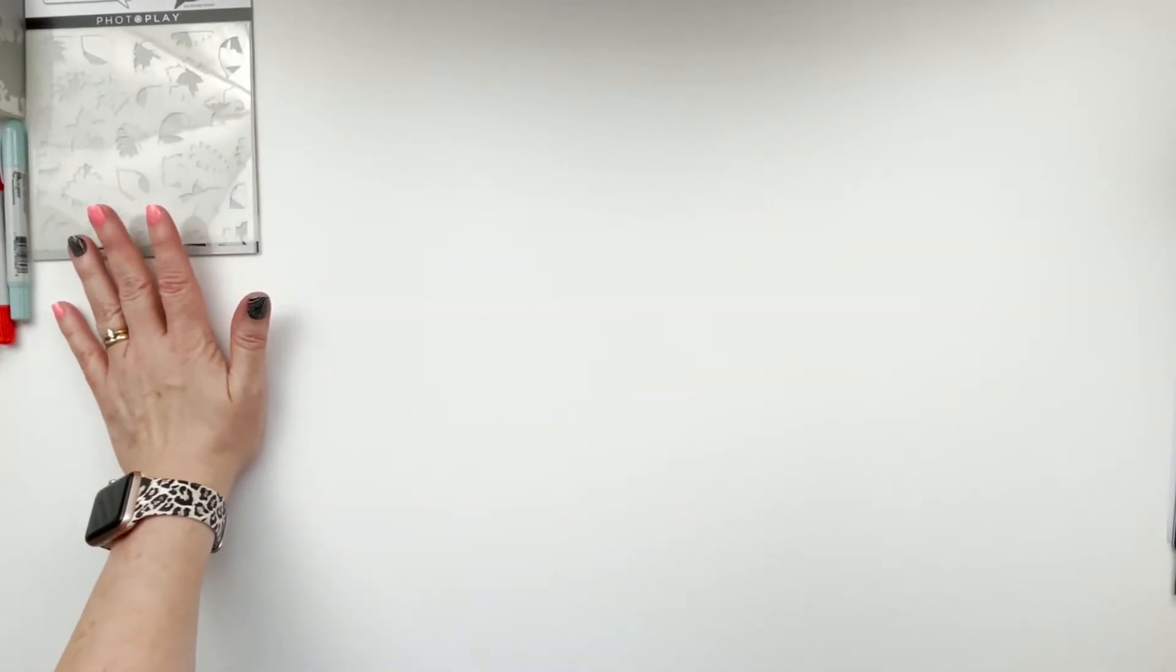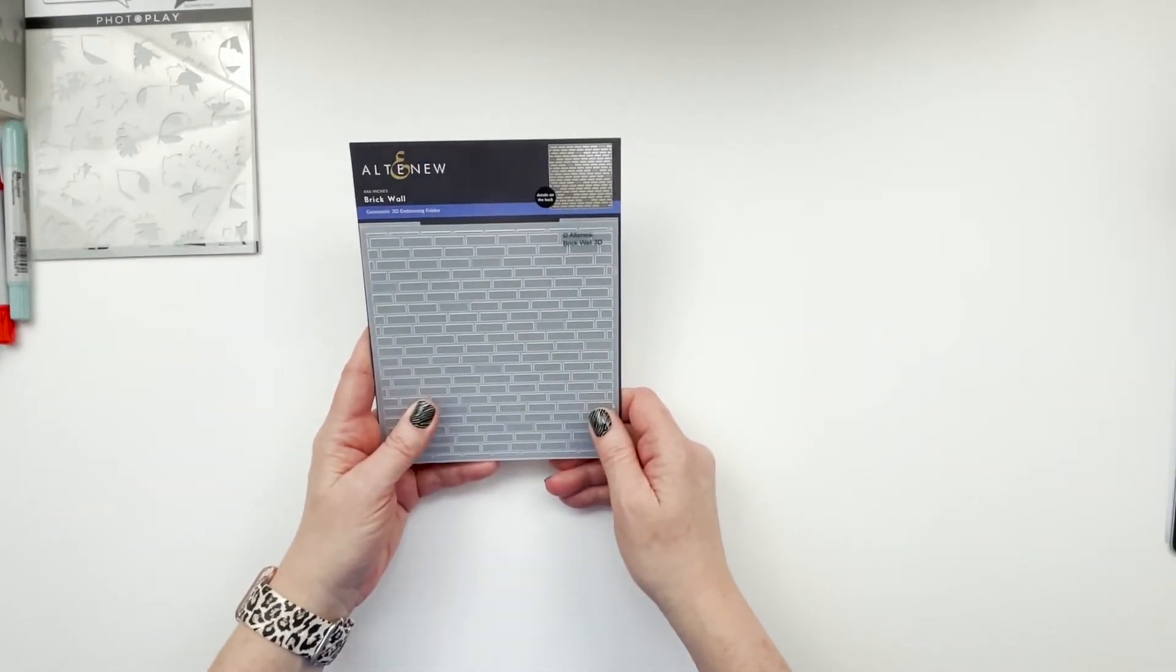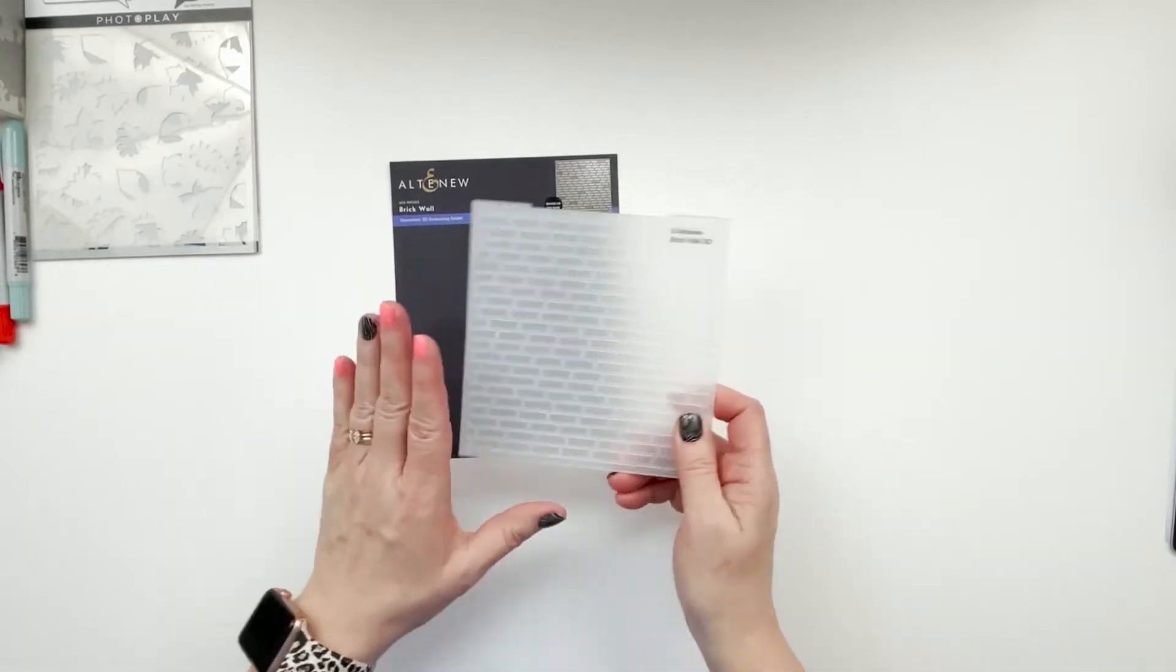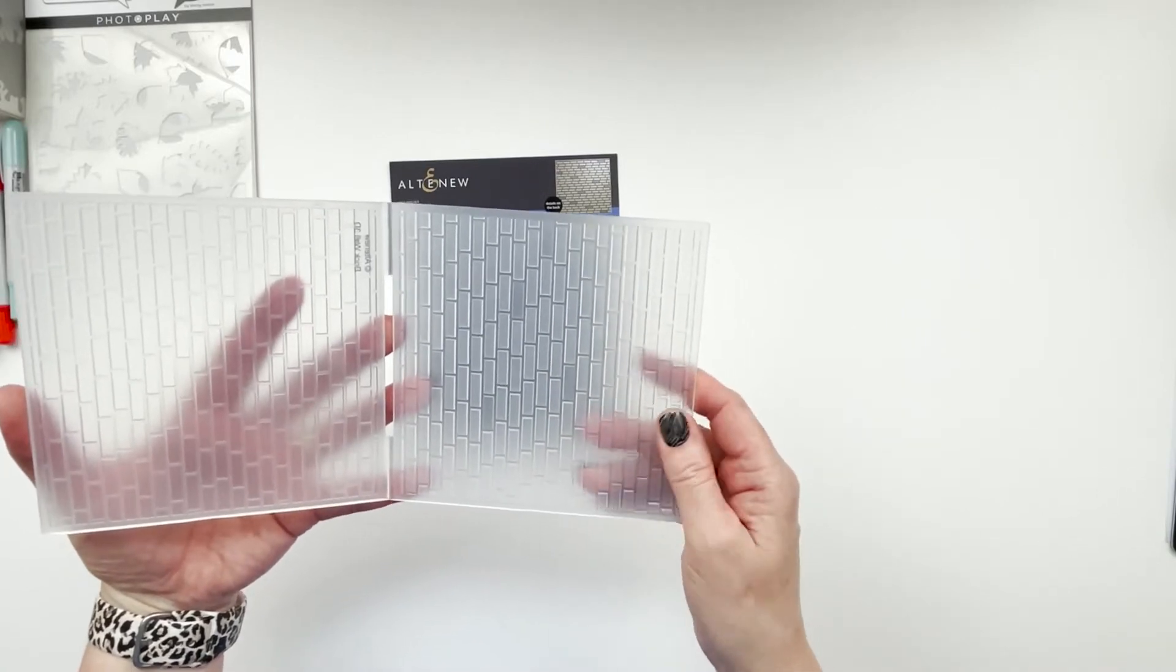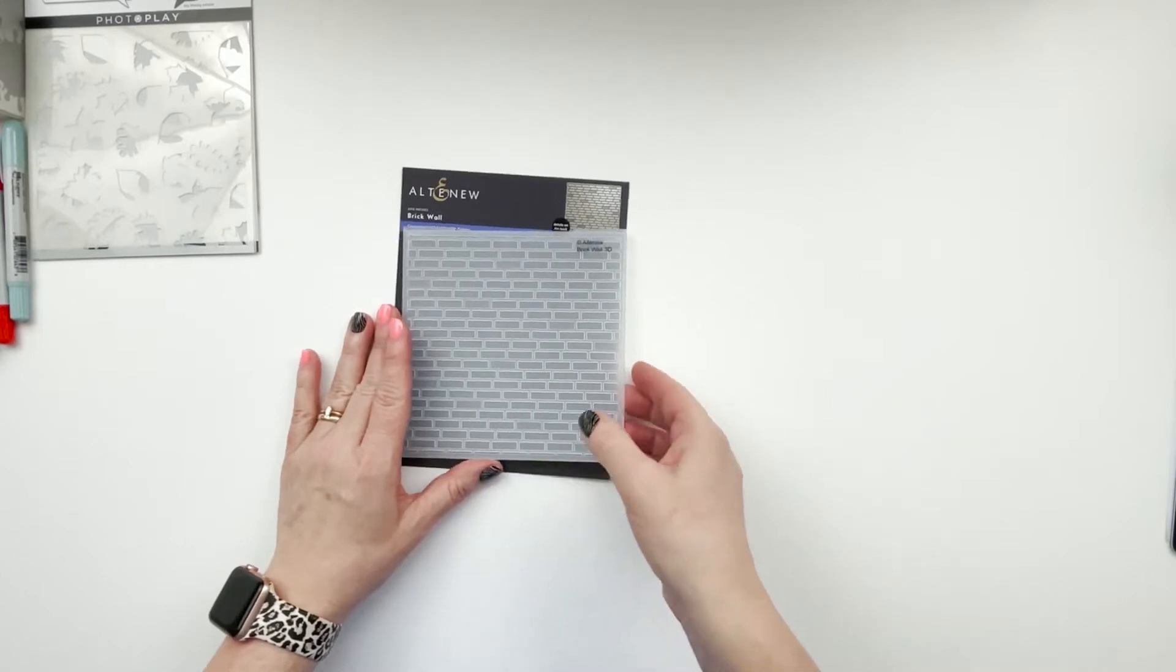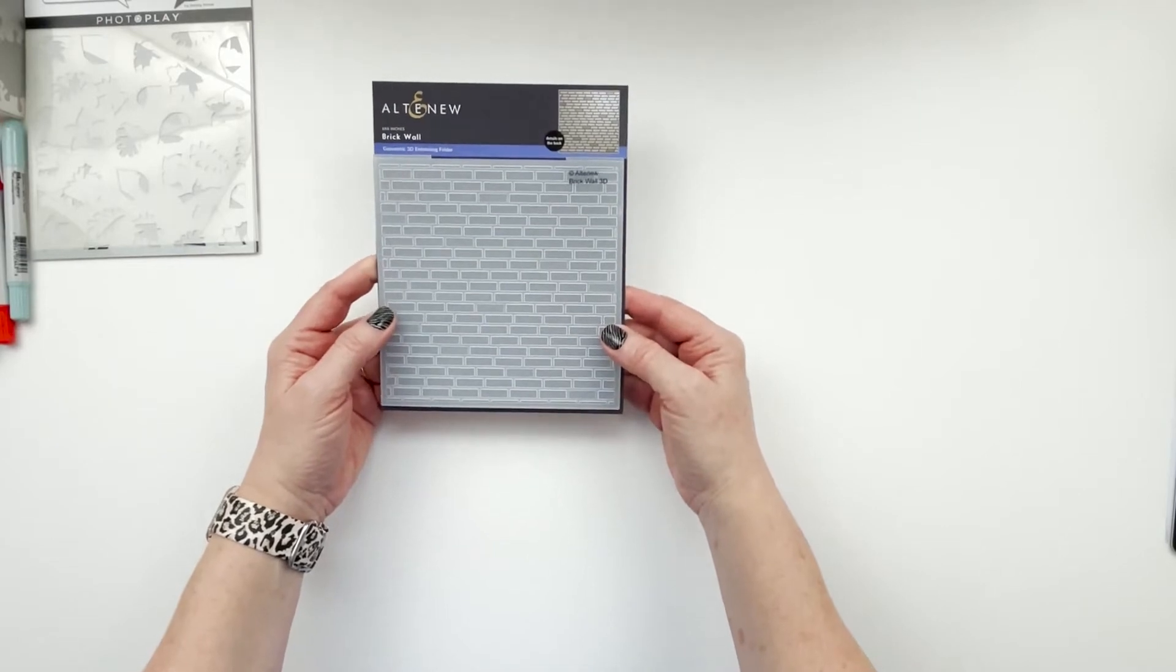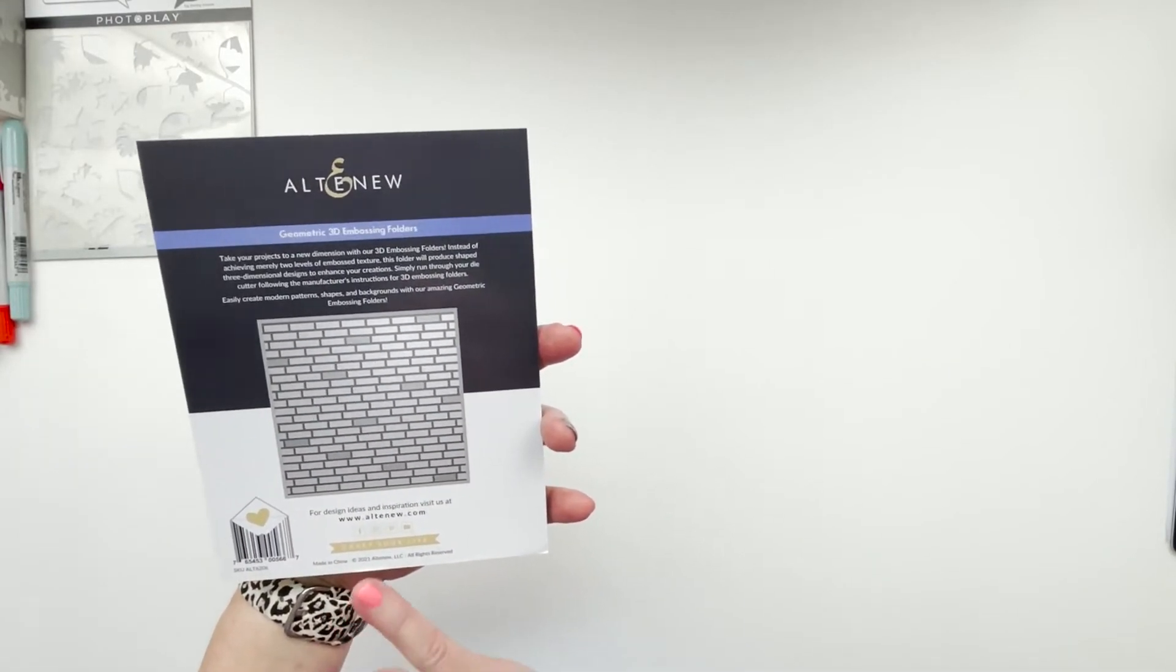And then from Altenew, I picked this brick wall embossing folder. And I only have maybe two or three embossing folders. And I saw, I think it was Janet from RTS talking about, I think she had a brick embossing folder. She also had one that was like planks or wood grain. It was sold out, but this one was available. And so I thought I would get it and try it, maybe in little smaller projects or just to kind of add a little bit of extra something here and there. So I am going to give this one a try.